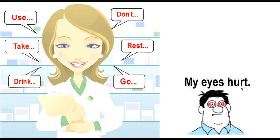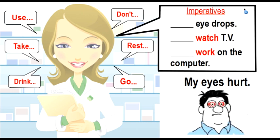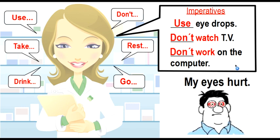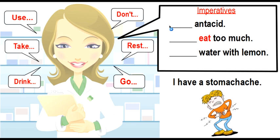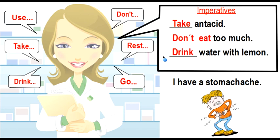The next problem: I have a stomach ache. What are the correct imperatives? Number one, take antacid. Next, don't eat too much. And the last one, drink water with lemon.